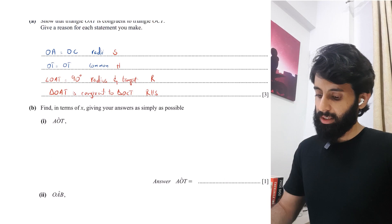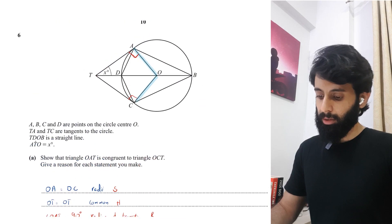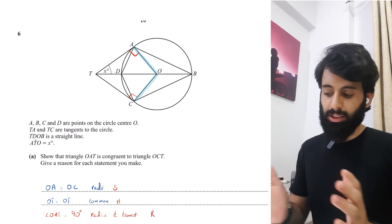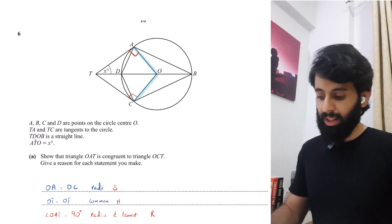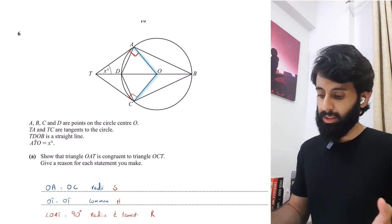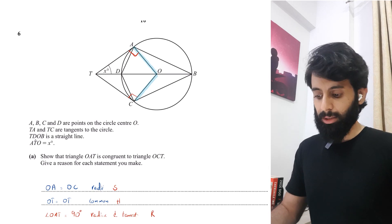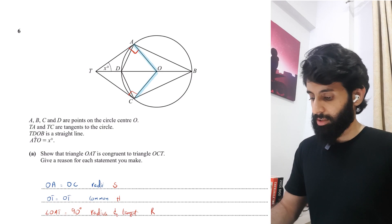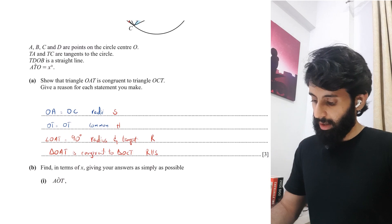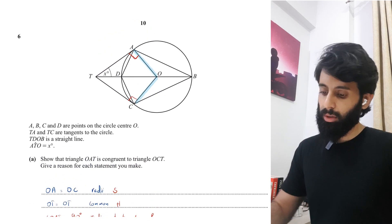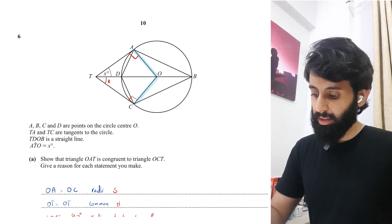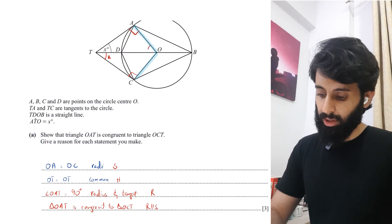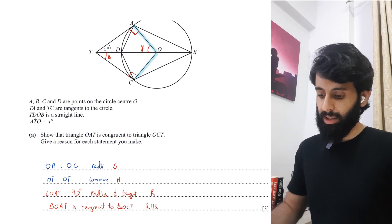Then it says find in terms of X giving your answers as simply as possible: angle AOT and angle OAB. So that means we're going to be dealing with circle properties here, although we don't have any values. And honestly speaking, there's no need to freak out. Even if the values were given, the method would have been the same. The difference is that now we're going to be using a lot of algebra.